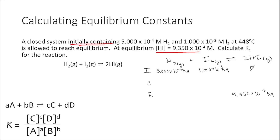H2 is going to decrease by some amount X. Based on the coefficients of the balanced chemical equation, for every one H2 I need one I2, so the concentration of I2 will also decrease by X. Looking at the product side, for every one H2 that reacts with one I2, I get two HI. So if the concentration of H2 decreases by X, the concentration of HI is going to increase by 2X — I'm just using the stoichiometric coefficients.